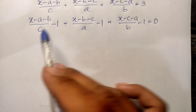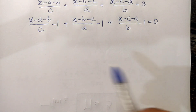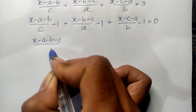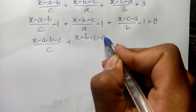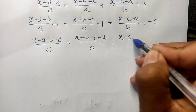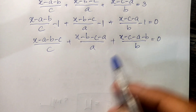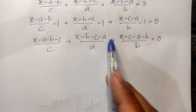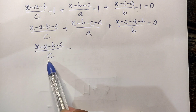Now we combine each term with its denominator. We denominate the first term by c, the second by a, and the third by b. Each bracket becomes (h minus a)(h minus b)(h minus c) over the respective denominator, and this equals 0.